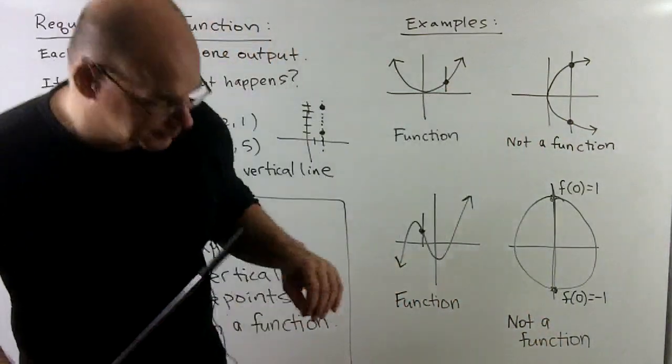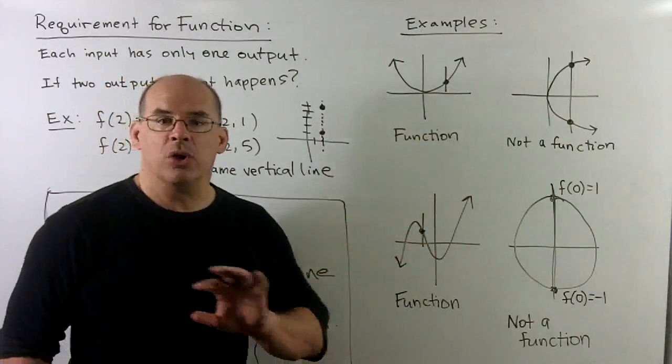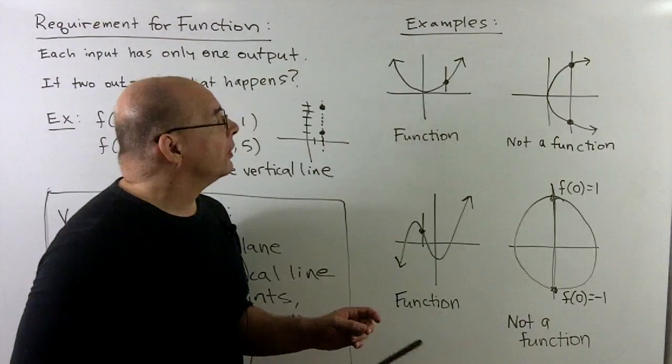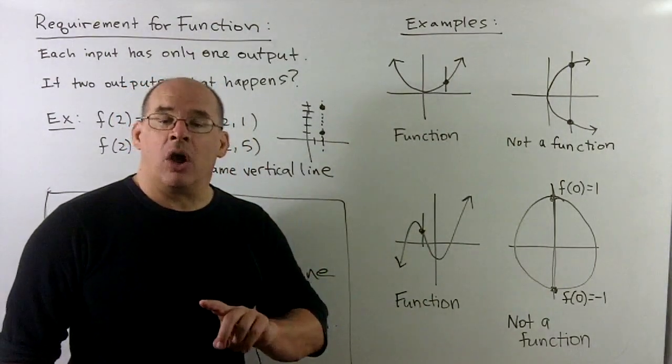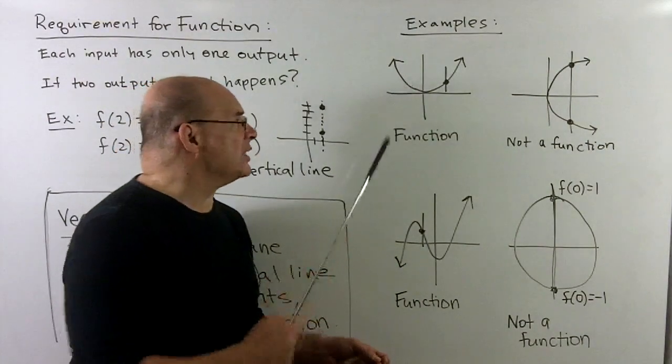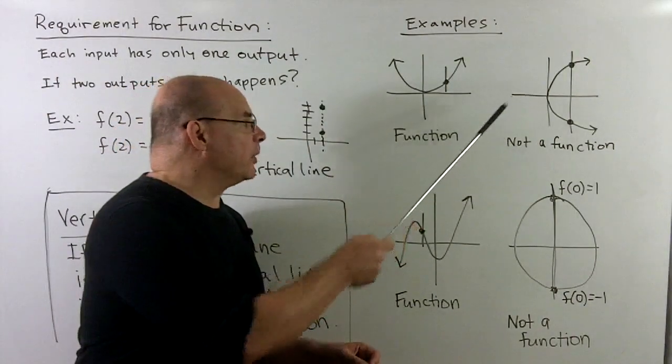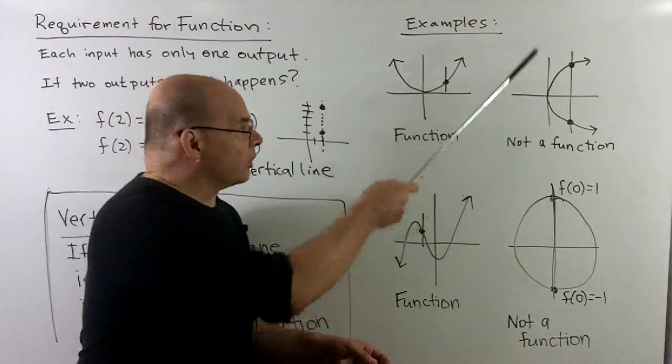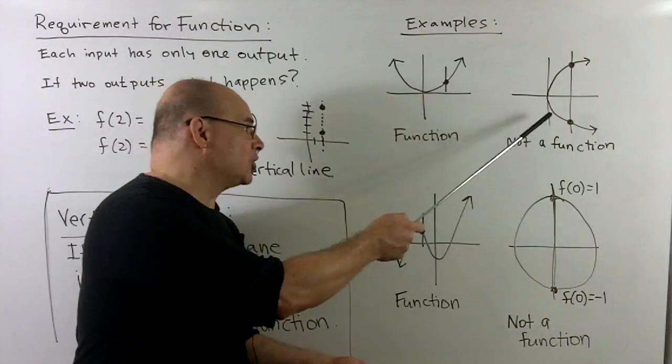Let's look at examples. Here we're just given graphs. There's no numerical data attached to these. If I have an upward facing parabola, you can draw in all the vertical lines that you like. This is a function. We have vertical lines cutting in exactly one place. If I put the parabola on its side, we draw in the vertical line itself. It cuts in two points, which means automatically not a function.